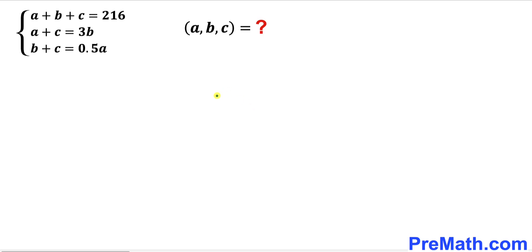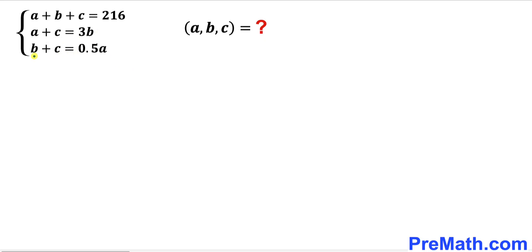Welcome to pre-math. In this video we have got an interesting problem that involves a system of three equations with three variables. Our first equation is a plus b plus c equals 216. Our second equation is a plus c equals three times b. And finally our third equation is b plus c equals 0.5 times a. Our task is to find the value of a, b, and c.